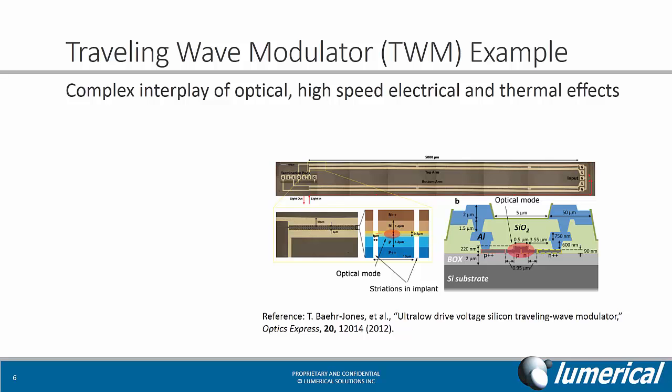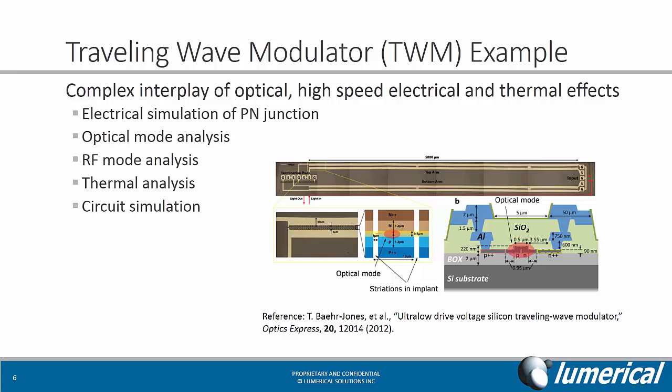The first example is a traveling wave modulator, and we'll use a design based on the reference listed here. For these devices, designers need to consider the complex interplay of optical, high-speed electrical, and thermal effects. This includes an electrical simulation of the PN junction, optical mode analysis, the RF mode analysis for the transmission line, thermal analysis, as well as the overall circuit response.